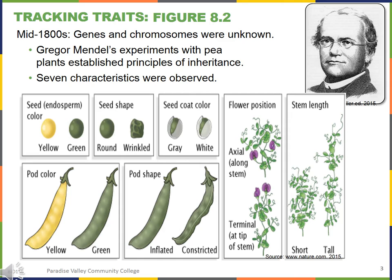This slide is a reminder that Gregor Mendel was doing this work in the mid-1800s. He studied genes and chromosomes, yet was not using those specific terms because they had not yet been derived. During his studies of the pea plants, he focused on seven different characteristics, including seed color — yellow versus green.